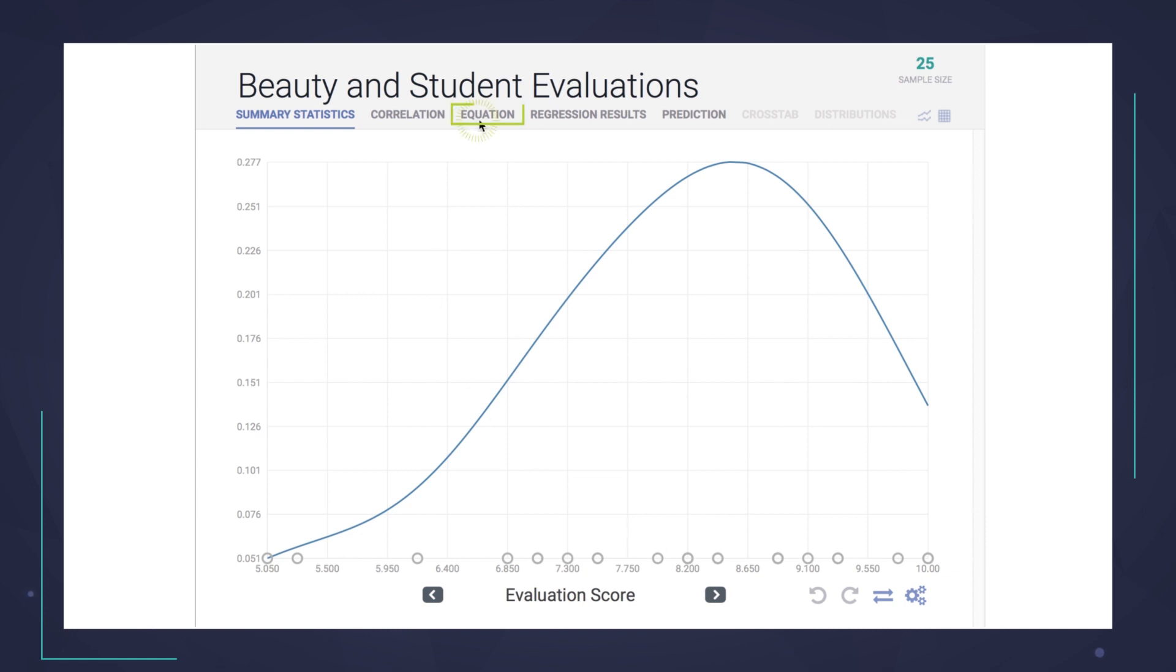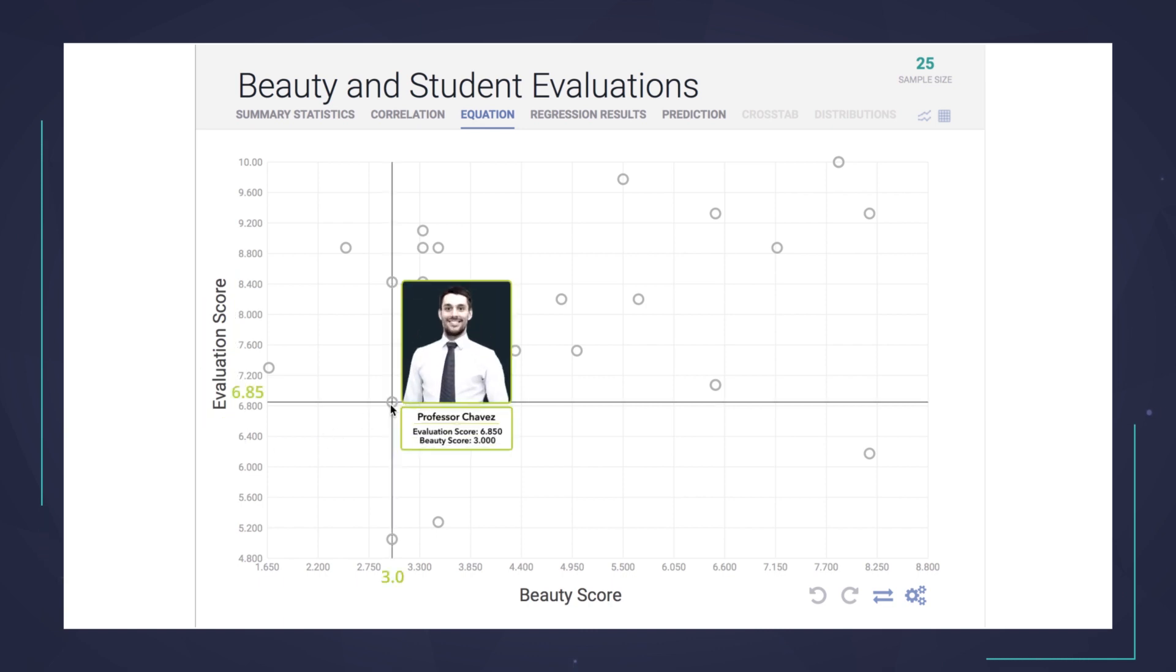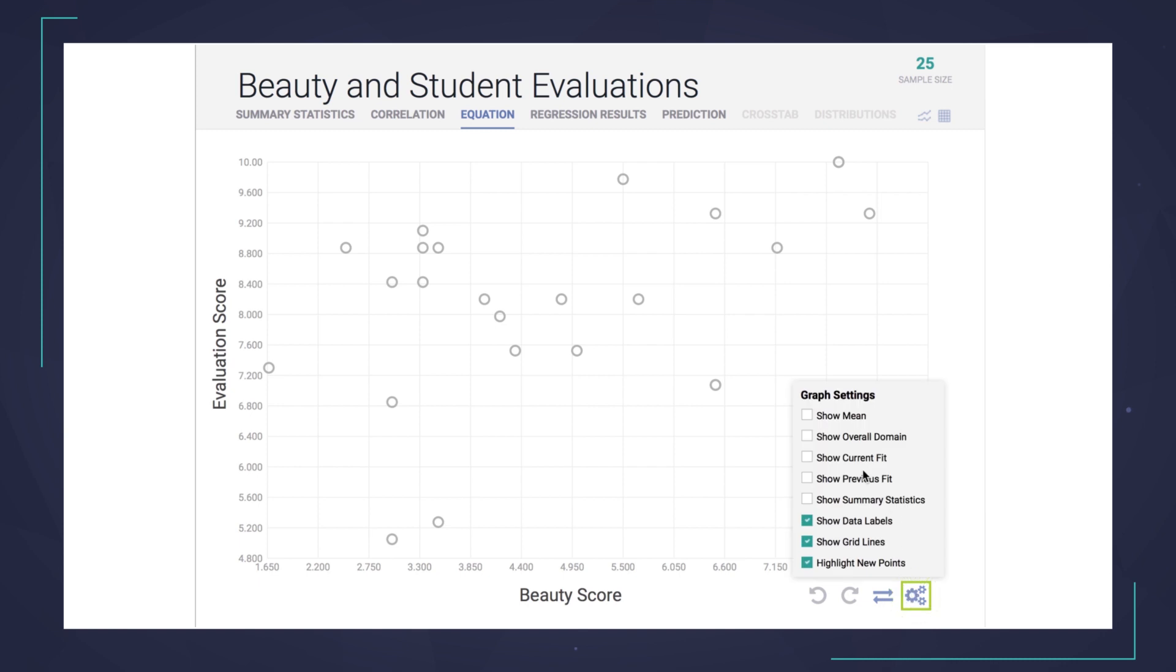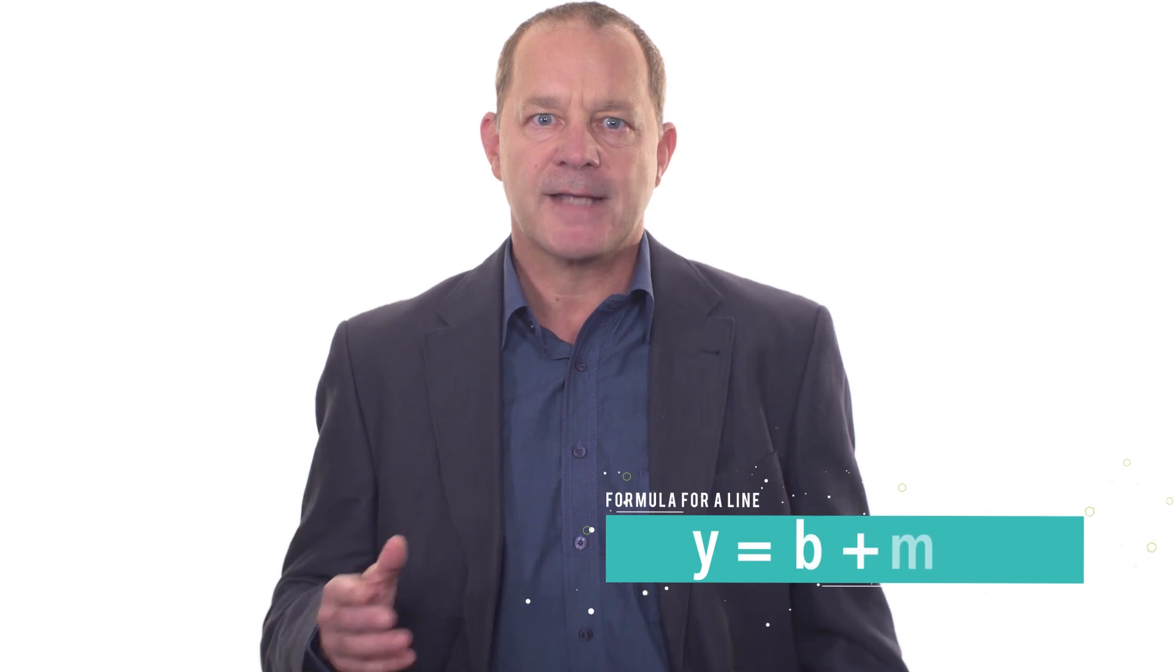If you click on the Equation tab, you will find our scatter plot. Beauty score is on the horizontal axis and evaluation score is on the vertical axis. If you hover over any point, you can see the exact values of the beauty score and the corresponding evaluation for that particular professor. You can click here to add the regression line. To better understand this line, let's take a minute to review the formula for a line which is often written as y equals b plus mx. You've probably seen this in a math class at some point.